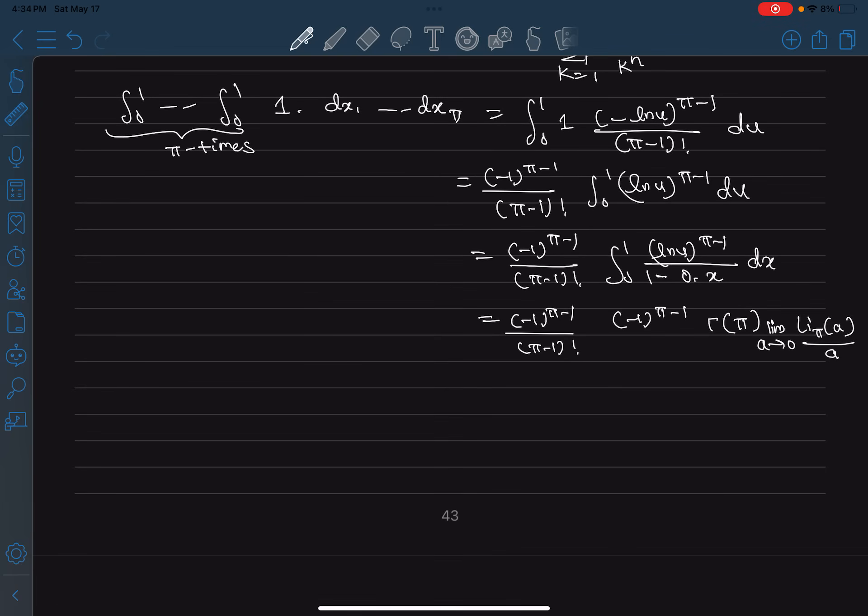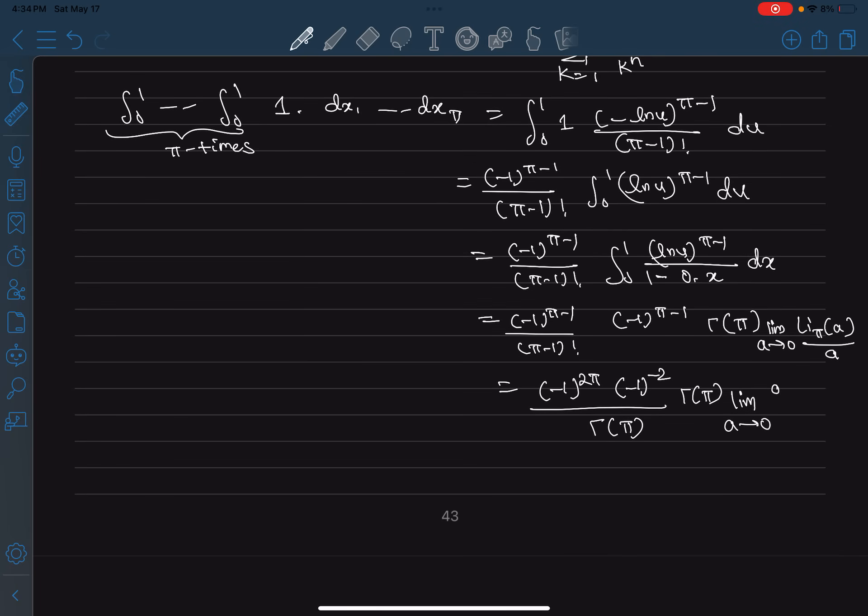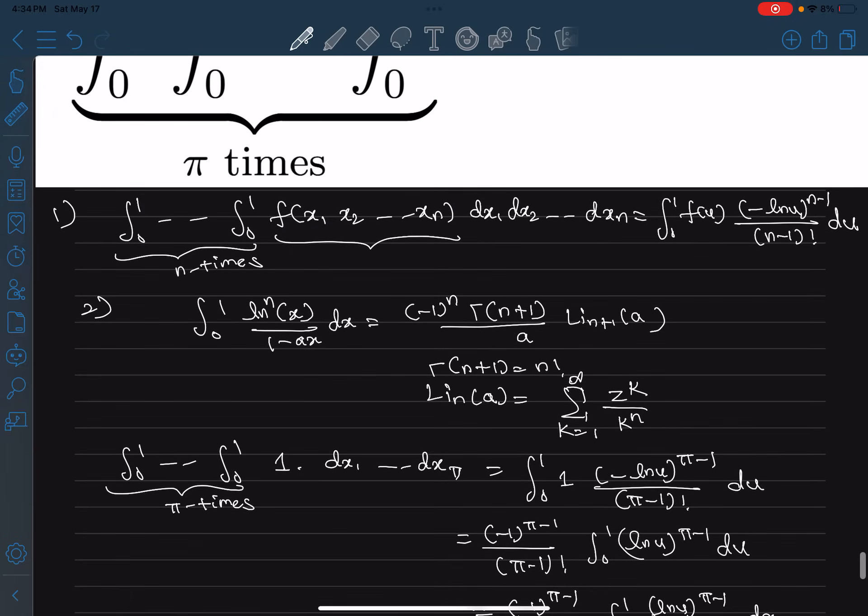Over here we will have negative 1 to the power 2π - negative 1 to the power minus 2 by gamma of - sorry, π minus 1 factorial is actually gamma of π - and gamma of π - that's nice even though we don't know the value now - that's gonna cancel. And now li_π of a would just be 1 to the power π times a by 1 to the power π plus a square by 2 to the power π plus a cube by 3 to the power π and so on, because that's what we get from this definition, and then divide by a.